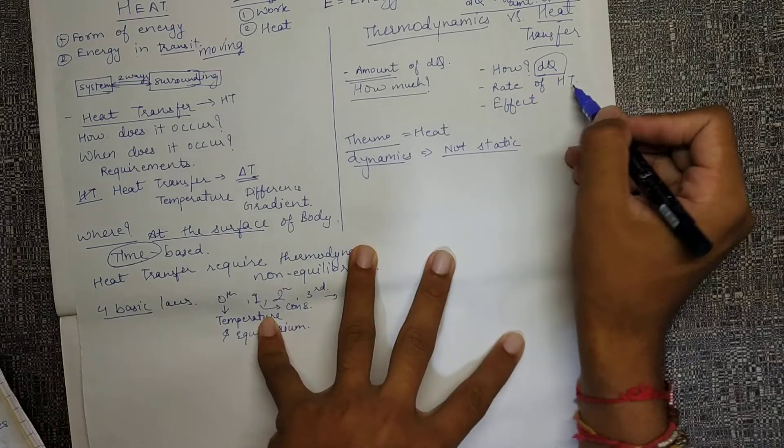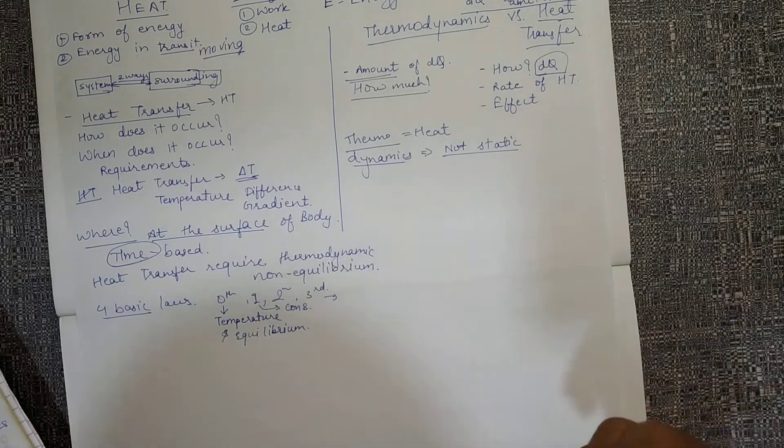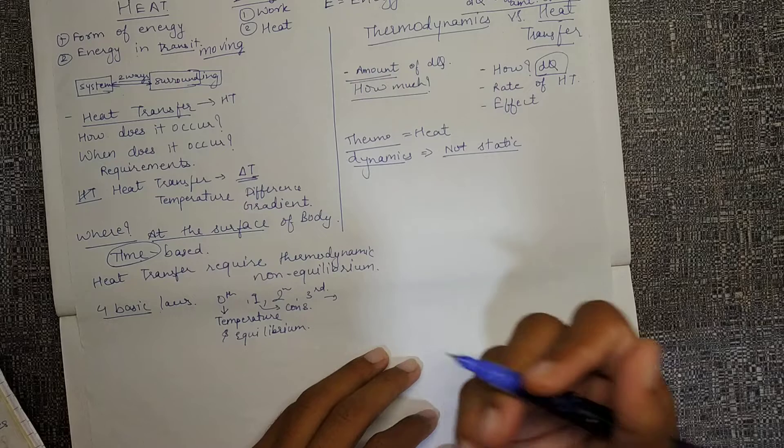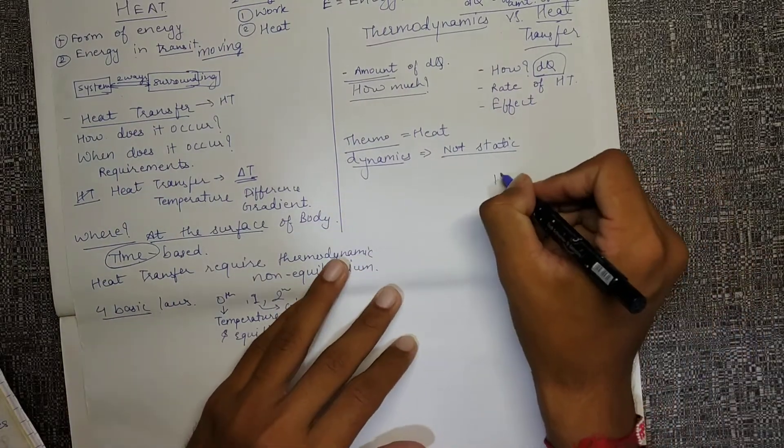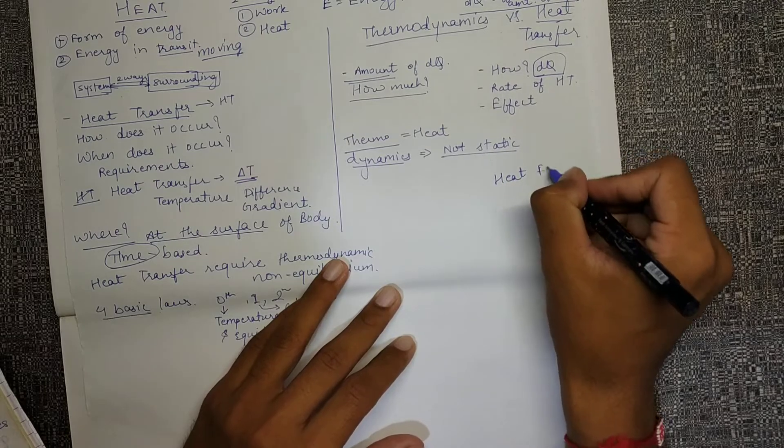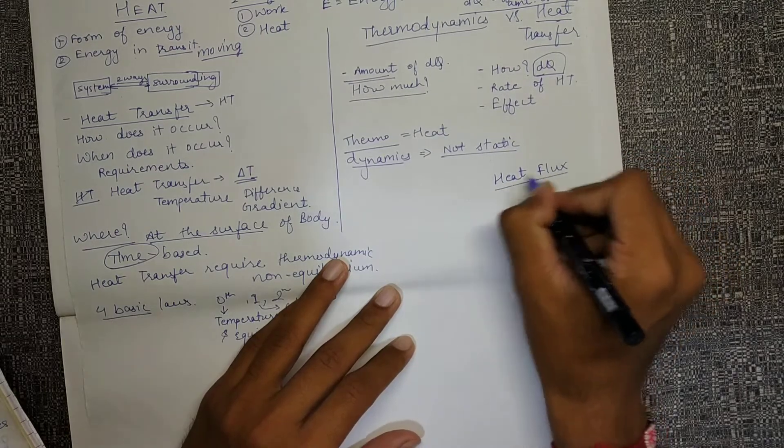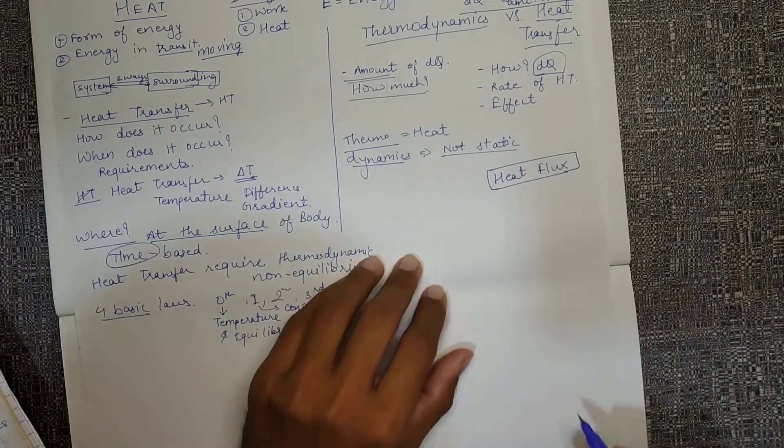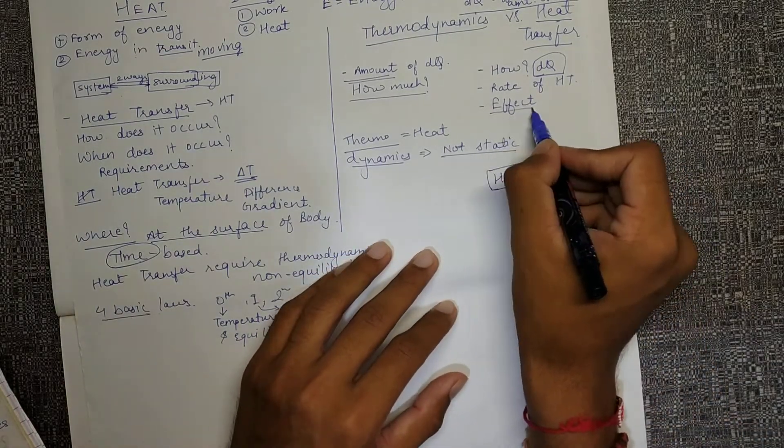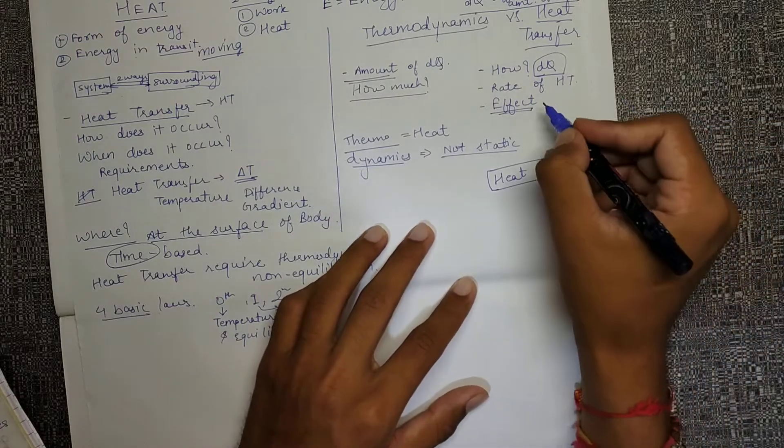What was the rate of that heat transfer? Is it fast? Is it slow? Slow and fast are qualitative terms, but we'll figure out the quantitative terms and define heat flux later. Heat flux will help us define the rate of heat transfer.